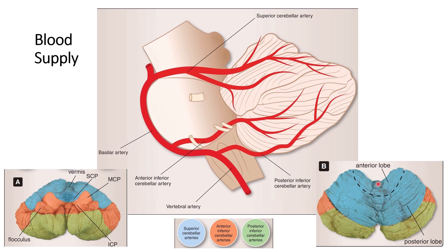The superior cerebellar artery also supplies part of the vermis — visible here — as well as part of the posterior lobe. Additionally, the superior cerebellar peduncle and the deep cerebellar nuclei are all supplied by the superior cerebellar artery.